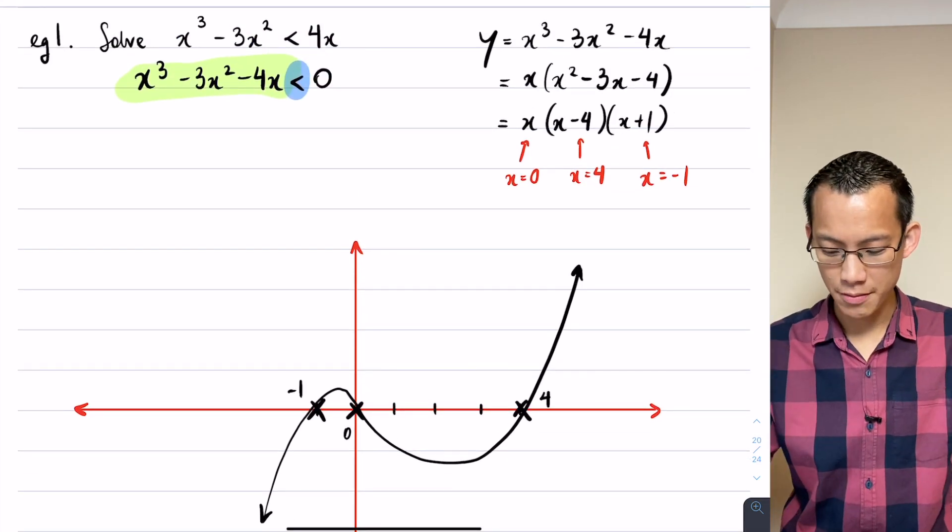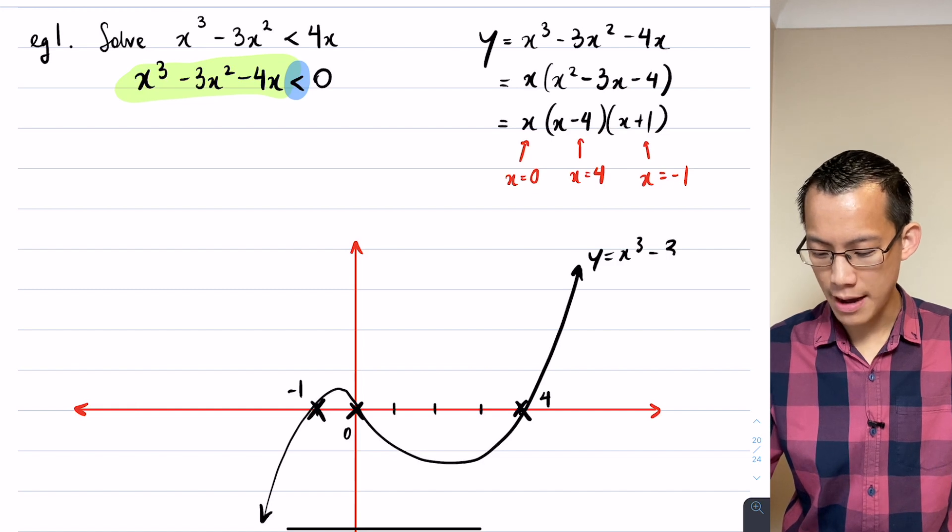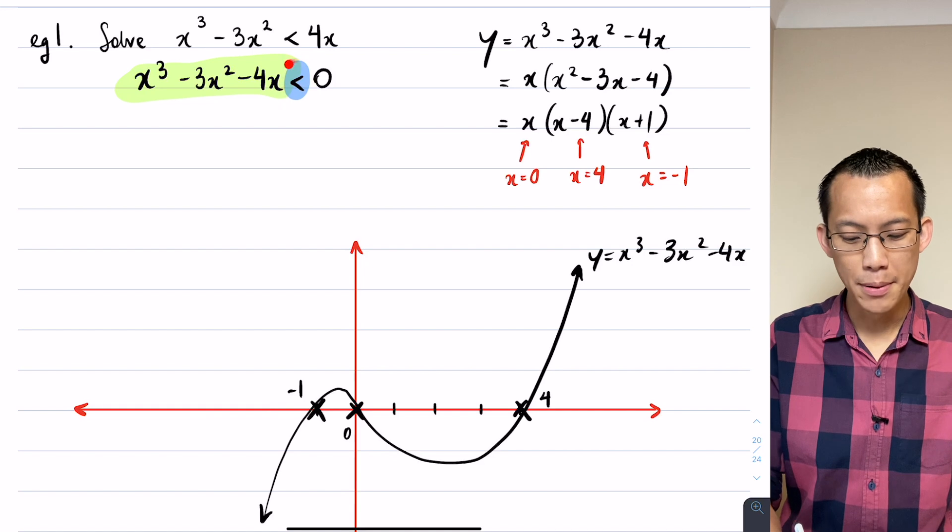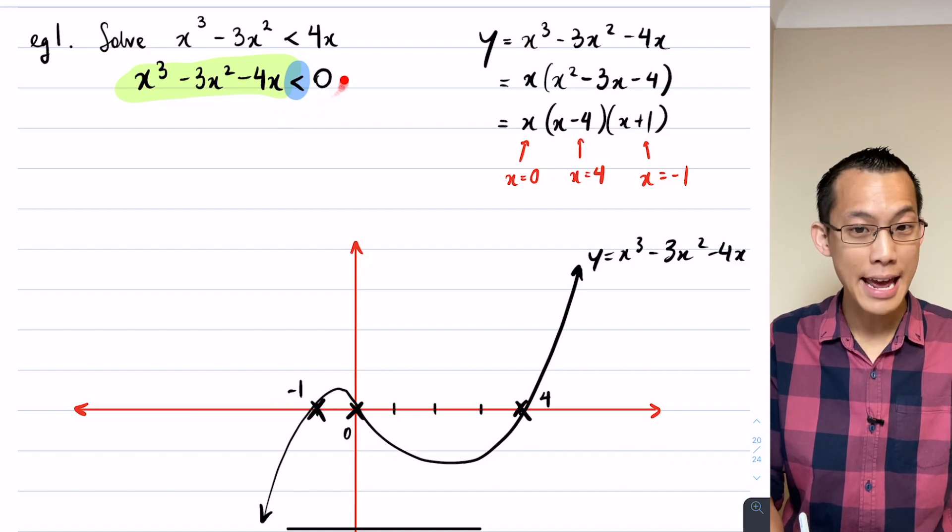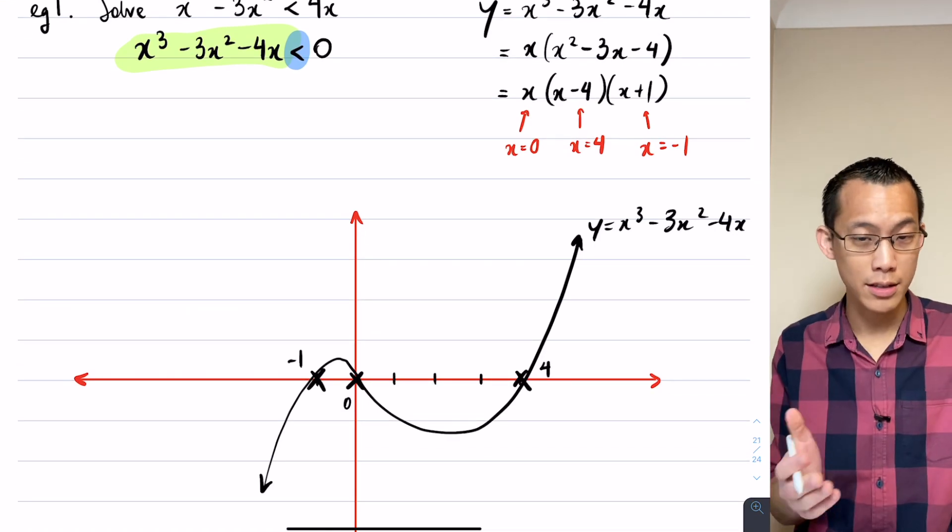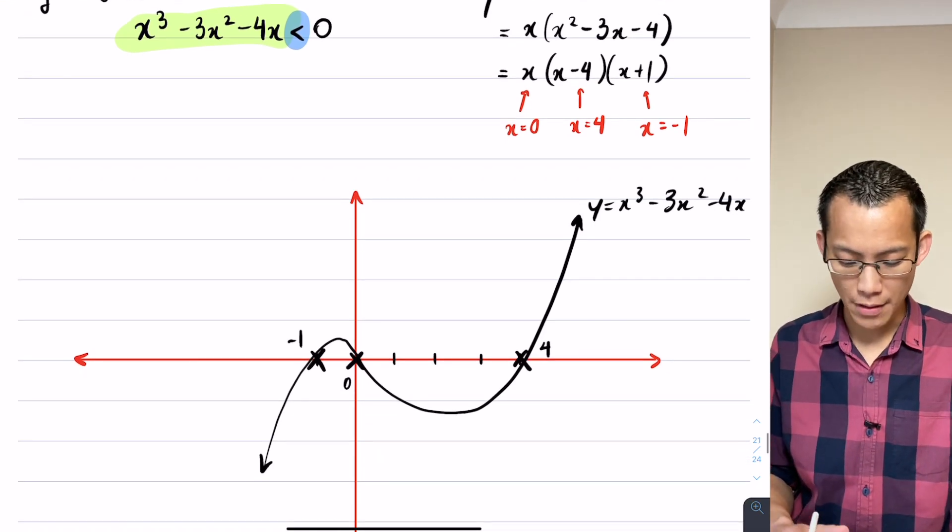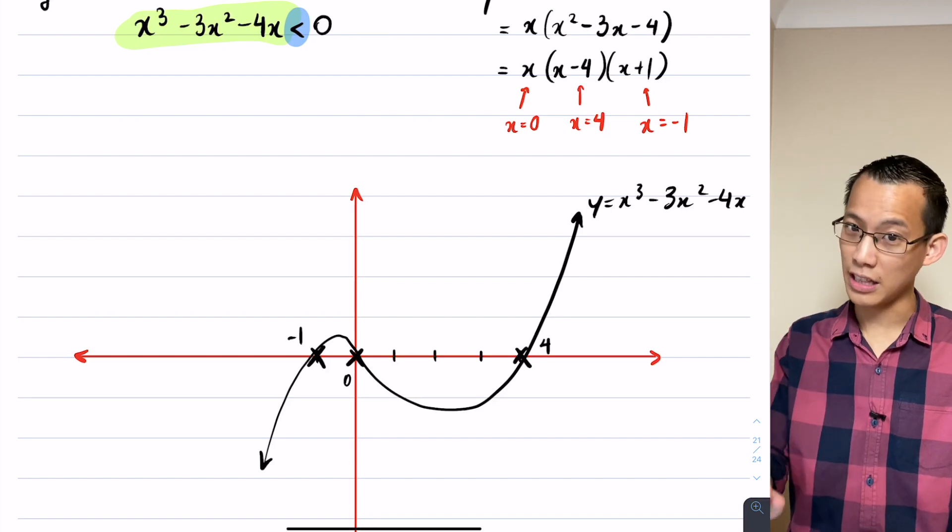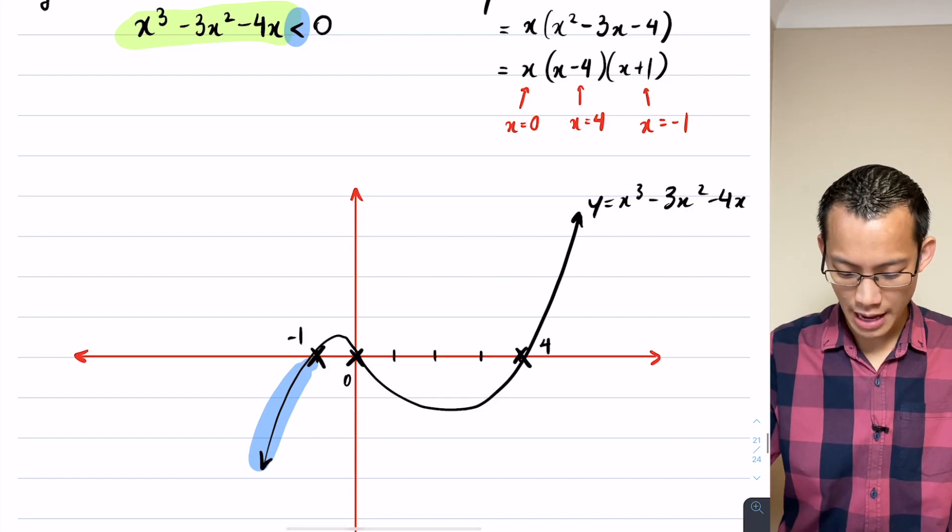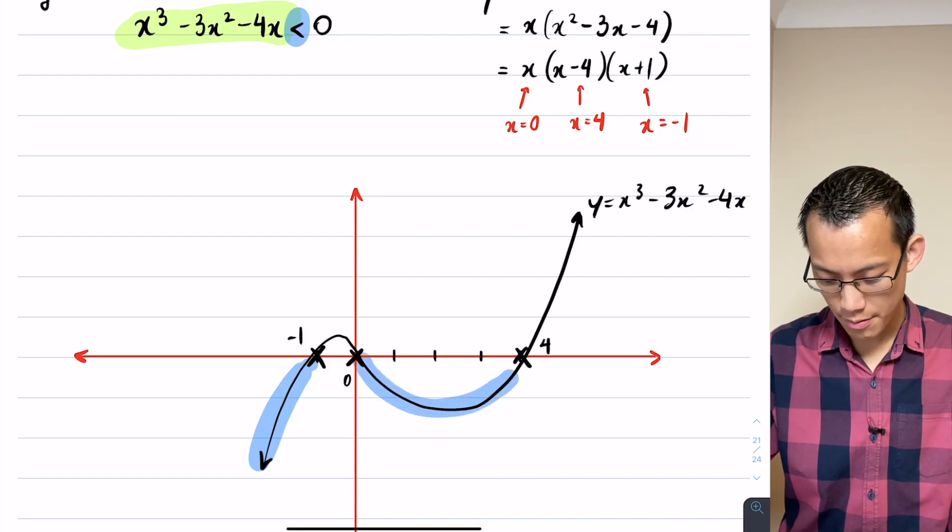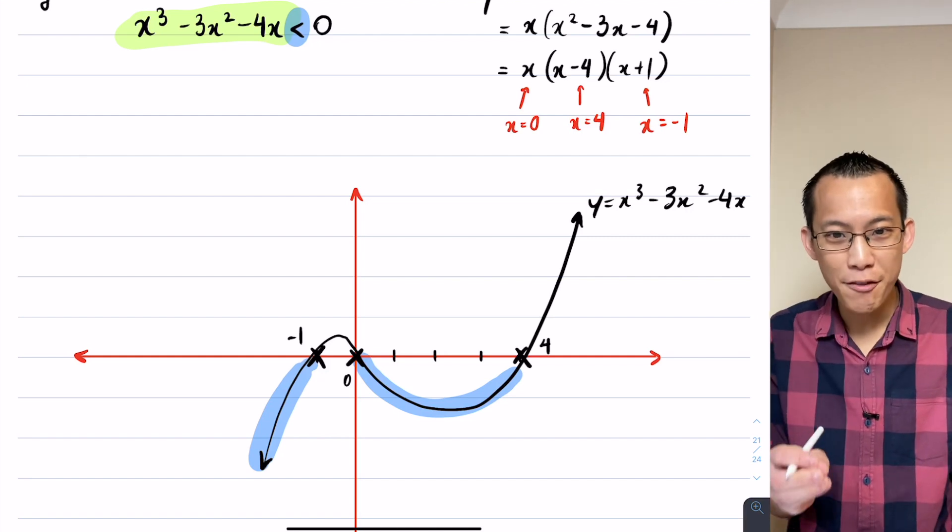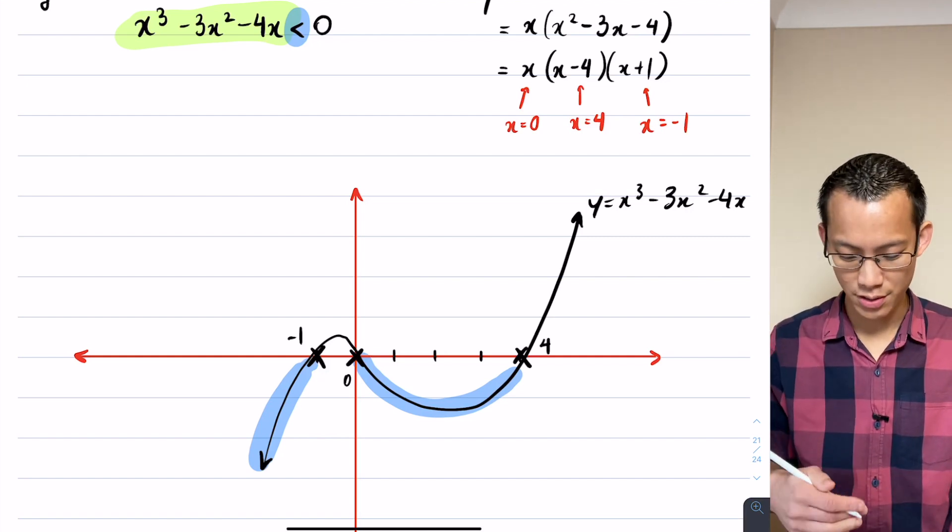Having a look back at this question, I want to know when is this graph, x cubed minus 3x squared minus 4x, when is it below the x-axis? When is it negative? And what I'll do is I'll literally highlight this on my graph, and if you haven't been using colors when you've been graphing, I highly encourage you to do so, it just makes it clear for you to know what's going on. This part of the graph is below the x-axis, and so is this part of the graph.